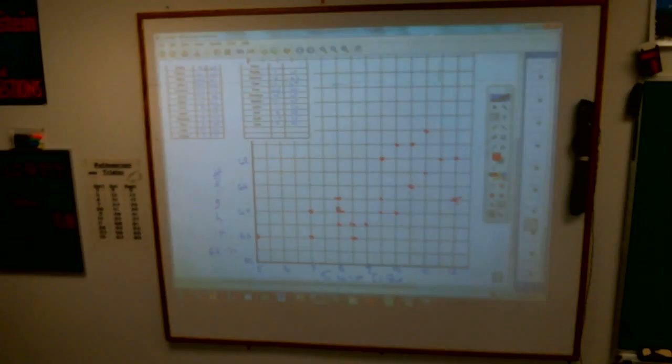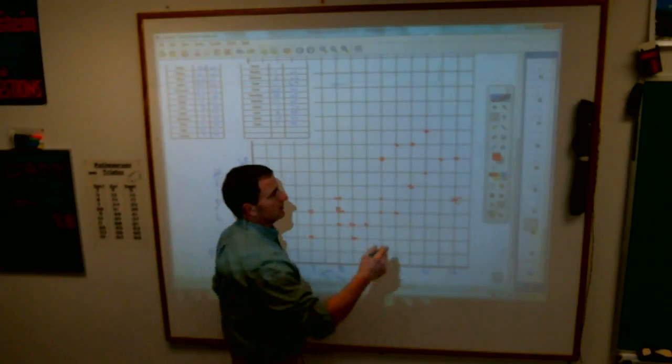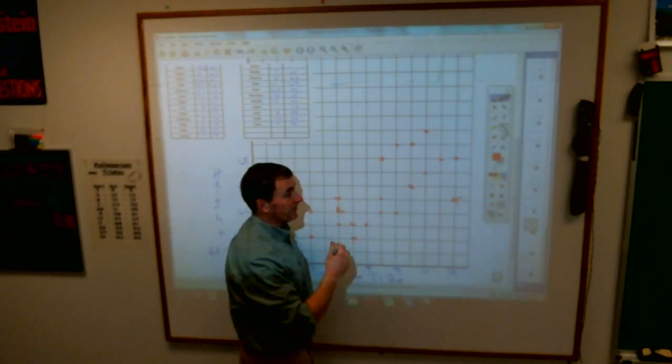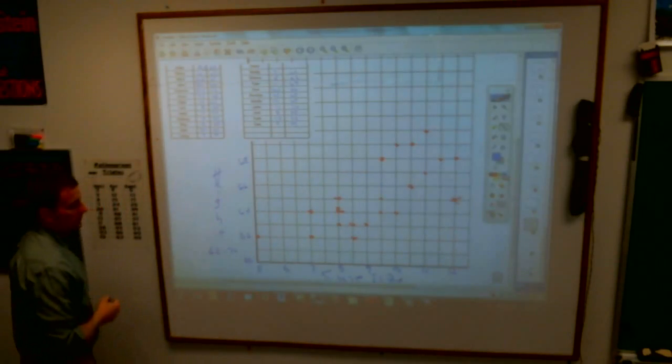So looking at it, positive correlation, negative correlation, definitely goes uphill from left to right, drawing a line of best fit, if you will, what do you suppose it would look like?